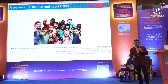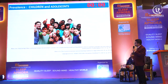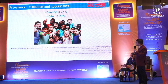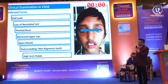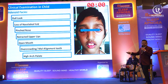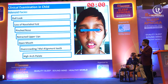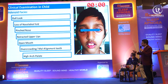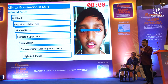Similarly, in children also, we have to understand the findings. We all know the classic findings of the child with adenoid facies: dark nose, loss of nasolabial fold, pinched nose, retracted nose, open mouth, and high arched palate.